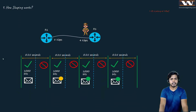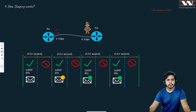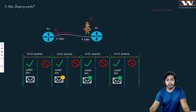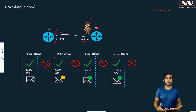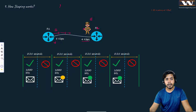Now introducing the concept of shaping. Previously I was happily sending 8 kbps from this interface, but now on R2 there's a policer saying do not send more than 4 kbps. My speed was 8 kbps, so now I have to stop for some period of time and send for some period. Since I need to send only 4 kbps, half the time I will not send and half the time I will send.